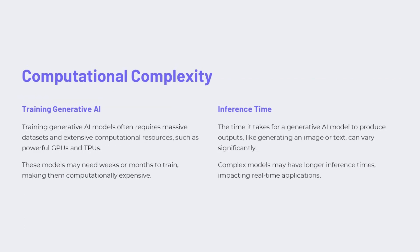Training generative AI models often requires massive datasets and extensive computational resources like powerful GPUs and TPUs. These models can take weeks or months to train, making them computationally expensive. The time it takes for a generative AI model to produce outputs — like generating an image or text — can vary significantly, and complex models may have longer inference times, which can impact real-time applications.